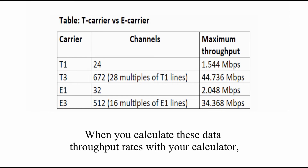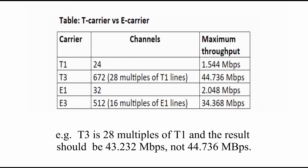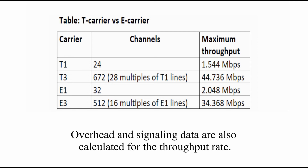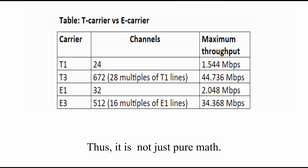When you calculate these data throughput rates with your calculator, you might find the math seems wrong, because the numbers are not exactly what you expect. For example, a T3 line is 28 multiples of a T1 line, and the result should be 43.232 Mbps, not 44.736 Mbps. The reason is simple: overhead and signaling data are also factored into the throughput rate, and when higher-level lines are used, less overhead is required. Thus, it is not just pure math.